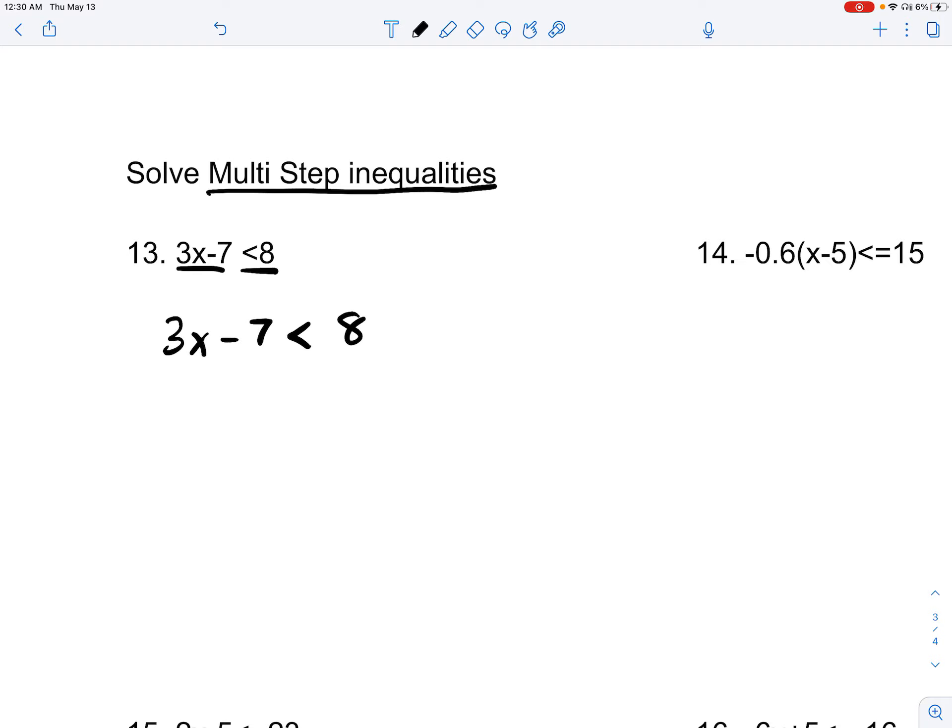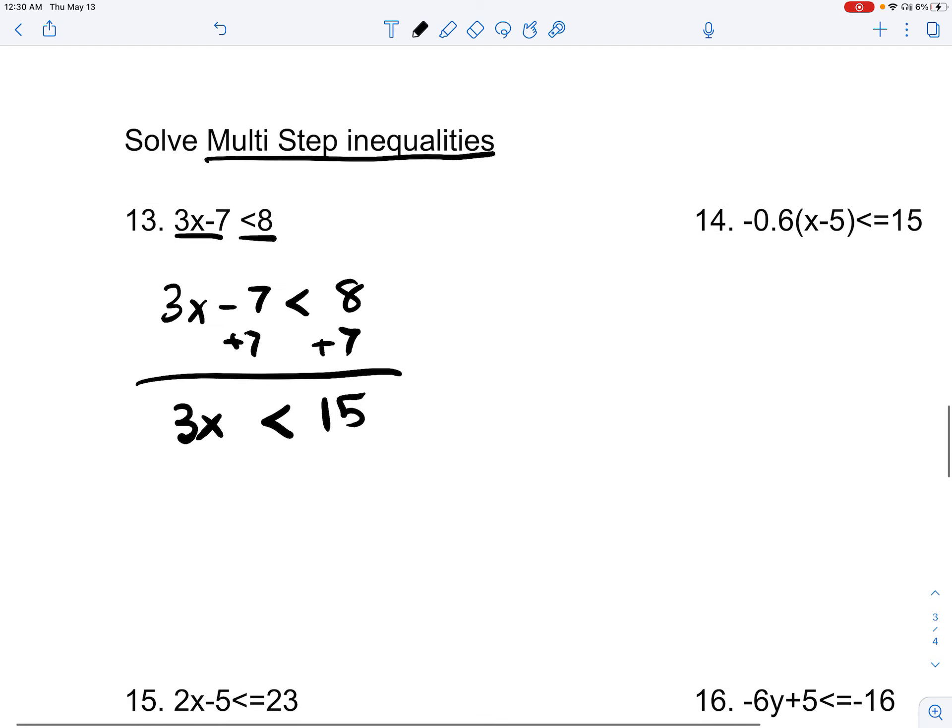6x minus 7 is less than 2x plus 17. Add 7 on both sides. You get 3x less than 15. If we divide 3 on both sides, we get x is less than 5. Now, what does this mean?